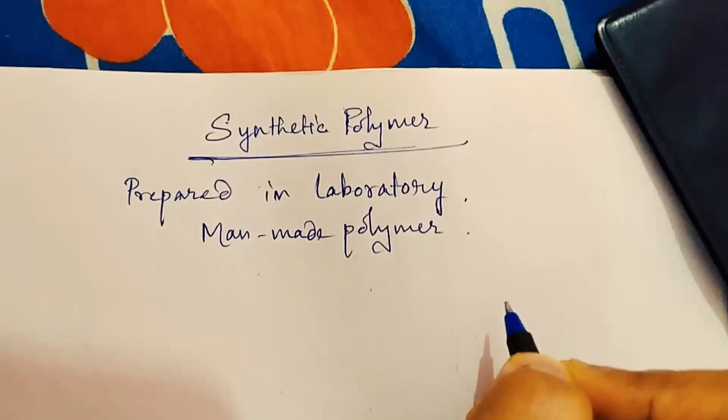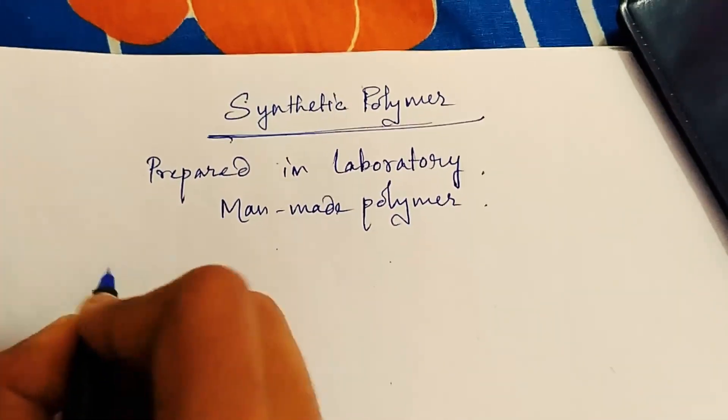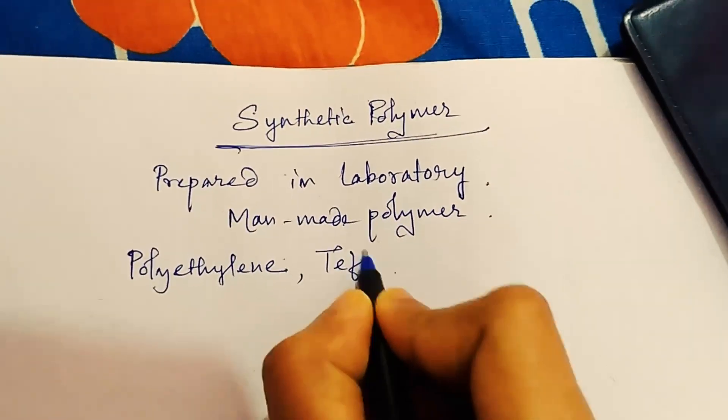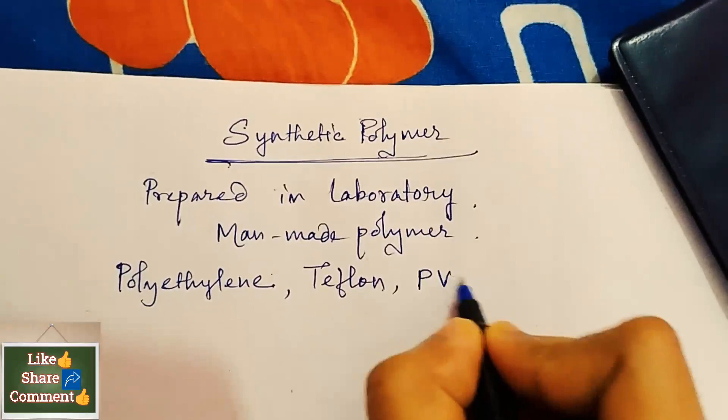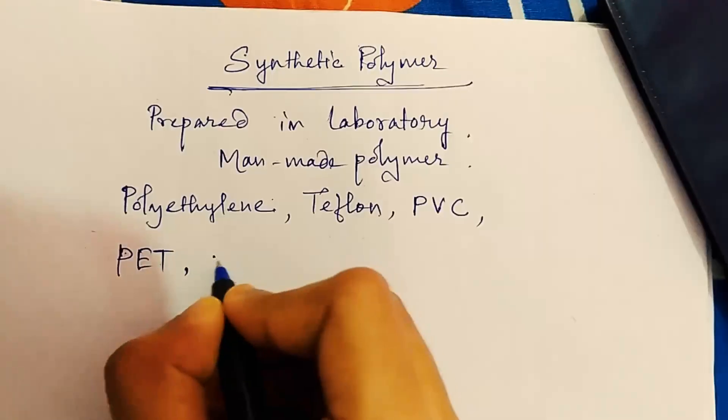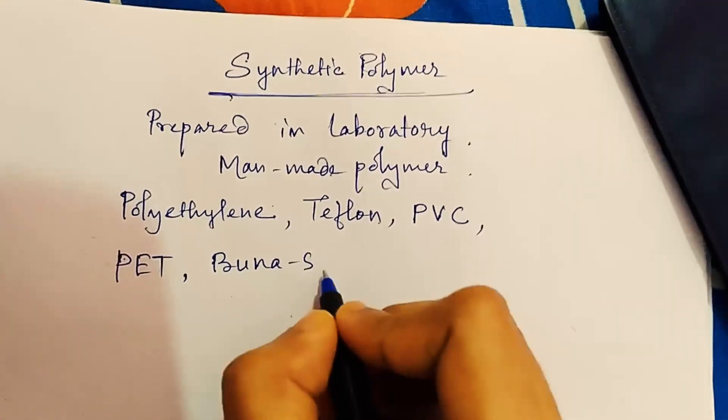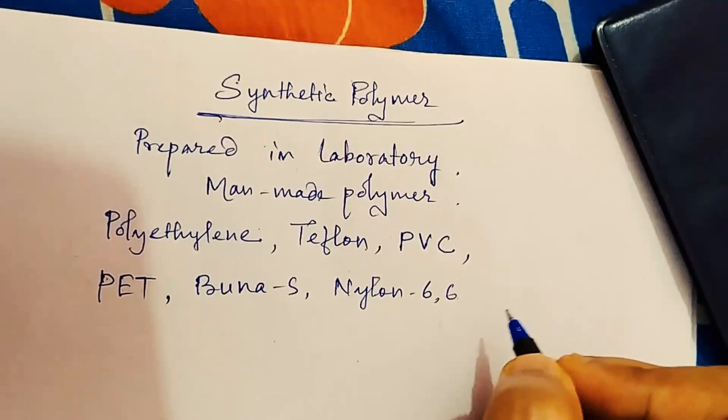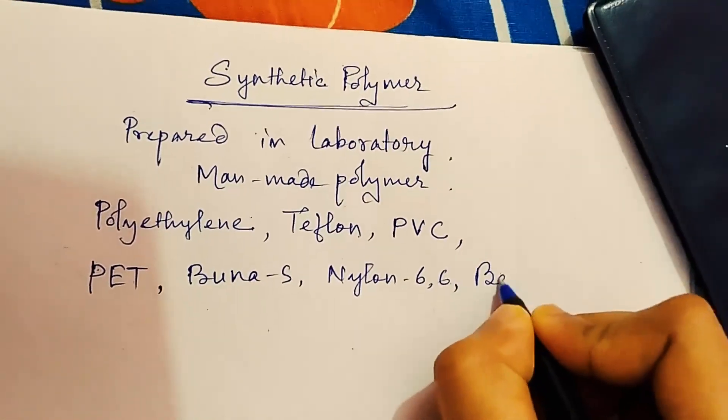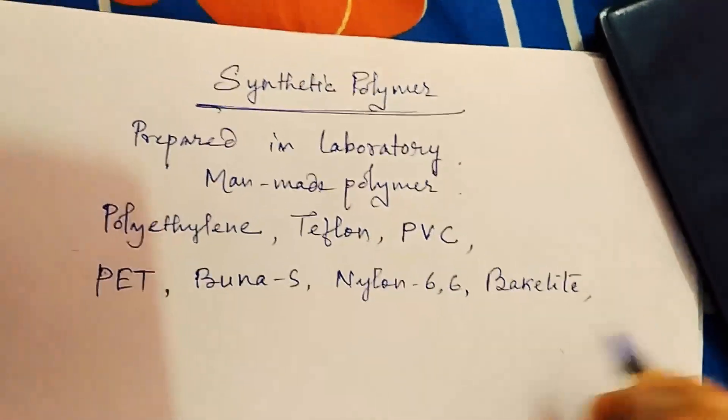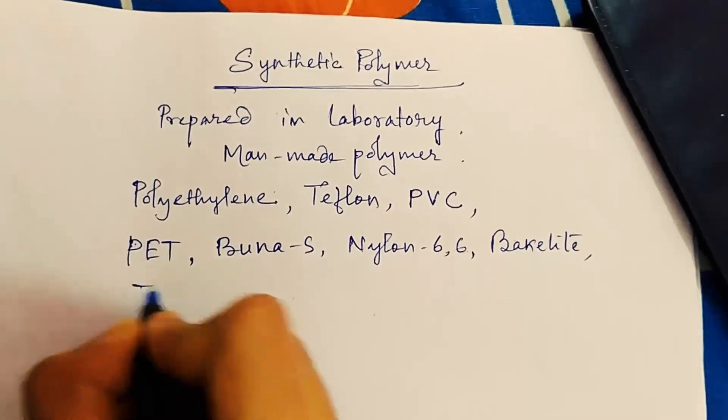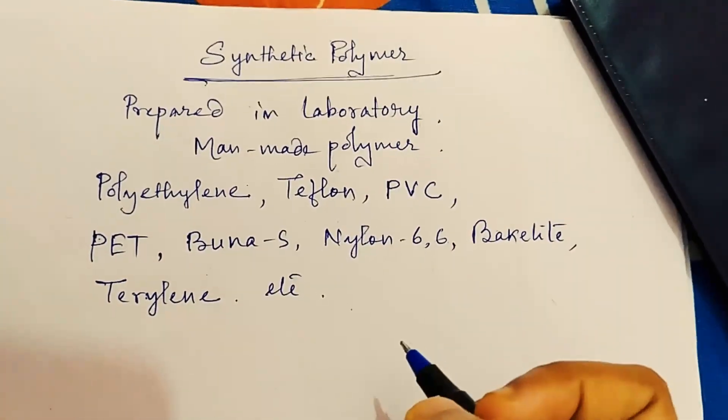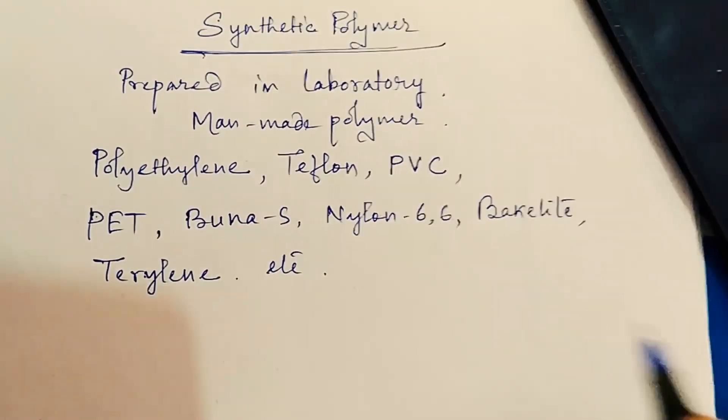Now some examples are like polyethylene, then teflon, then PVC, PET, then comes synthetic rubber like Buna-S, synthetic fiber like nylon 6,6, then bakelite, terylene is there also, and many more.